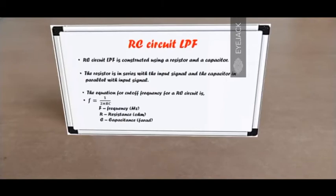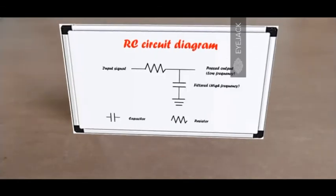So if you have a cutoff frequency in mind and a particular capacitance value, you can plug in those values and obtain the value of resistance to be used. Here's the circuit diagram. On the left you have an input signal — it passes through the resistor and comes to a junction point. One branch leads to a capacitor and the other leads to the output. The high frequencies prefer to enter the capacitor, whereas the low frequencies become the output.